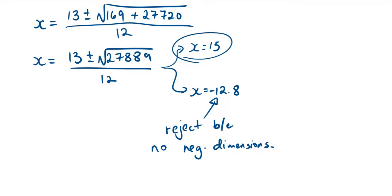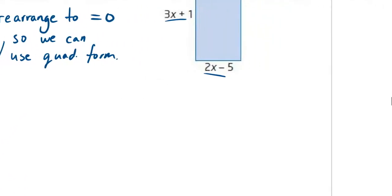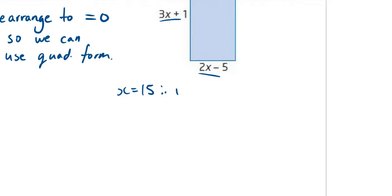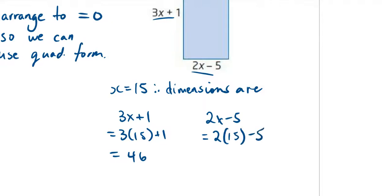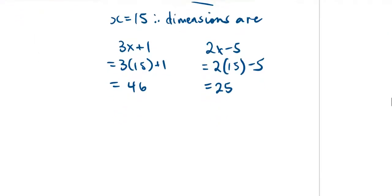So x equals 15 is our solution. Therefore, the dimensions are: length = 3(15) + 1 = 46, and width = 2(15) − 5 = 25. To verify, 46 times 25 equals 1,150, which matches the area originally given in the question.